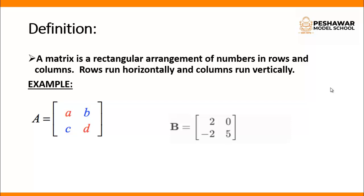Every single digit is known as an element of that matrix. For example, in matrix A, 'a' is our basic element, 'b' is our basic element. Similarly, 'c' and 'd' are the elements of matrix A.